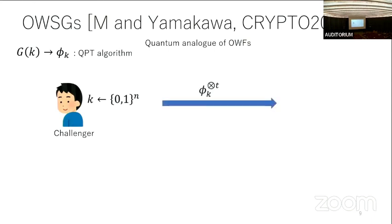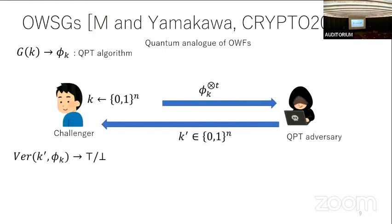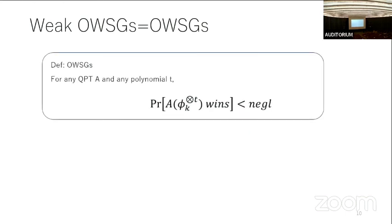Security is a quantum analog of one-wayness. The challenger chooses key K and sends T copies of Phi_K to a QPT adversary. This adversary must output some bit string K* such that it is accepted by the verification algorithm. One-wayness means the probability that K' is accepted is negligibly small.